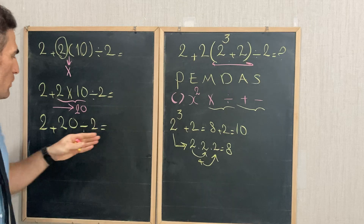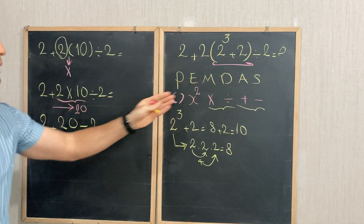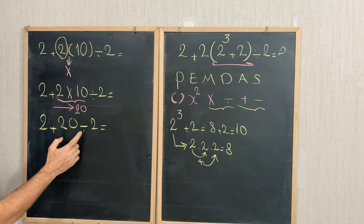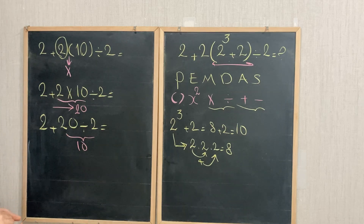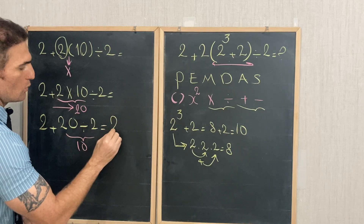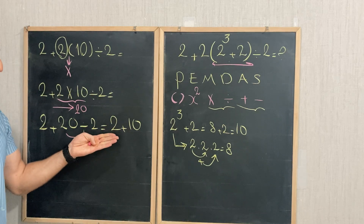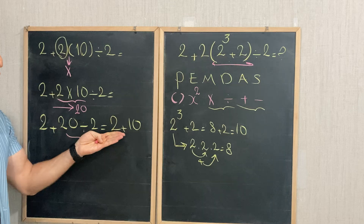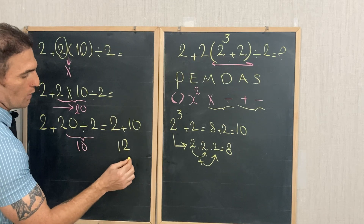Next, we do the division: 20 ÷ 2 = 10. Now we have 2 + 10. Finally, the only remaining operation is addition: 2 + 10 = 12. So the answer is 12.